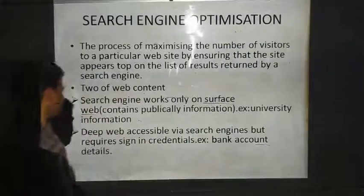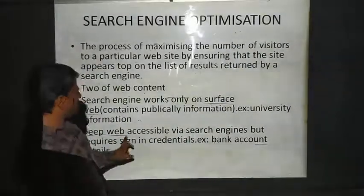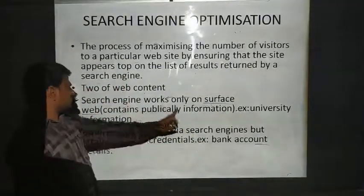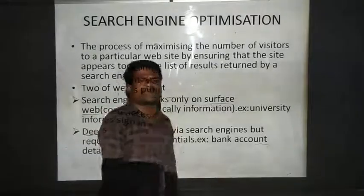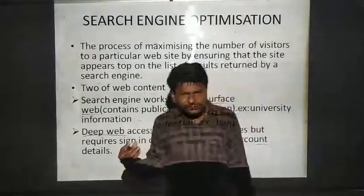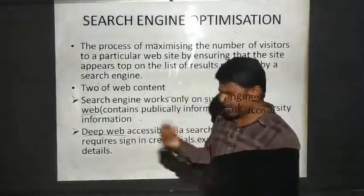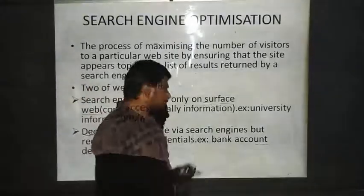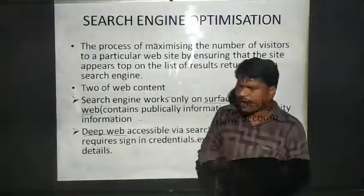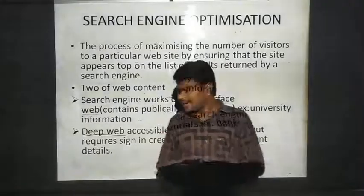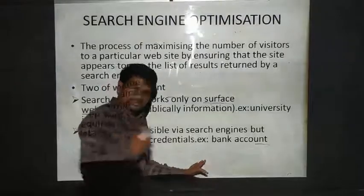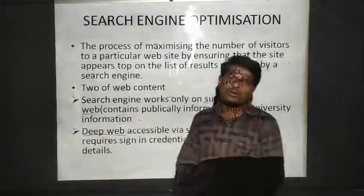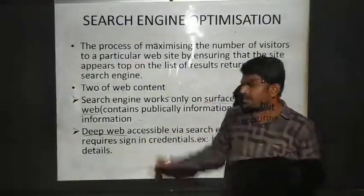Another type of web is the deep web. The deep web is also accessible via search engine, but there is a difference. In the surface web, the search engine searches all web pages and lists available information. Whereas in the deep web, access requires credentials. For example, if I want to check my SBI account balance, I need to provide my login credentials — searching alone does not show my account balance. This is the difference between surface web and deep web.